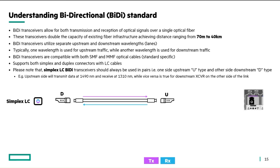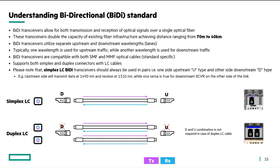For instance, if you are using a simplex bi-di type U on one side, you have to use type D on the other side. For type U, let's imagine it transmits data at 1490 nanometers and receives data at 1310 nanometers. On the other side, the type D transceiver will receive data at 1490 nanometers and transmit at 1310 nanometers — that's why they must be used in pairs. For duplex LC bi-di, this pairing is not a problem; it is automatically handled when you connect duplex LC cables, and it will have two LC ports.